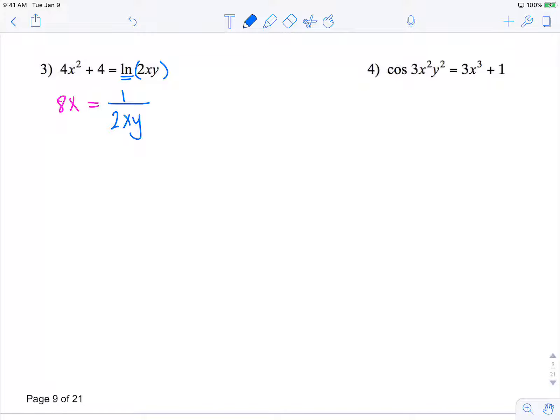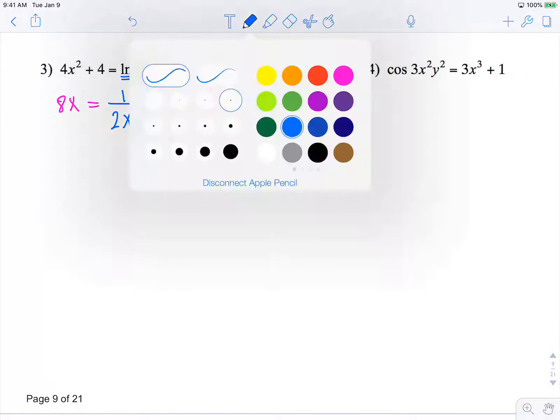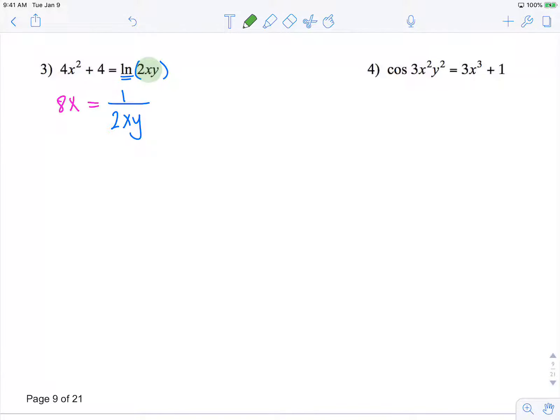So now I need to multiply by the derivative of what's on the inside, and I see product rule 2x.